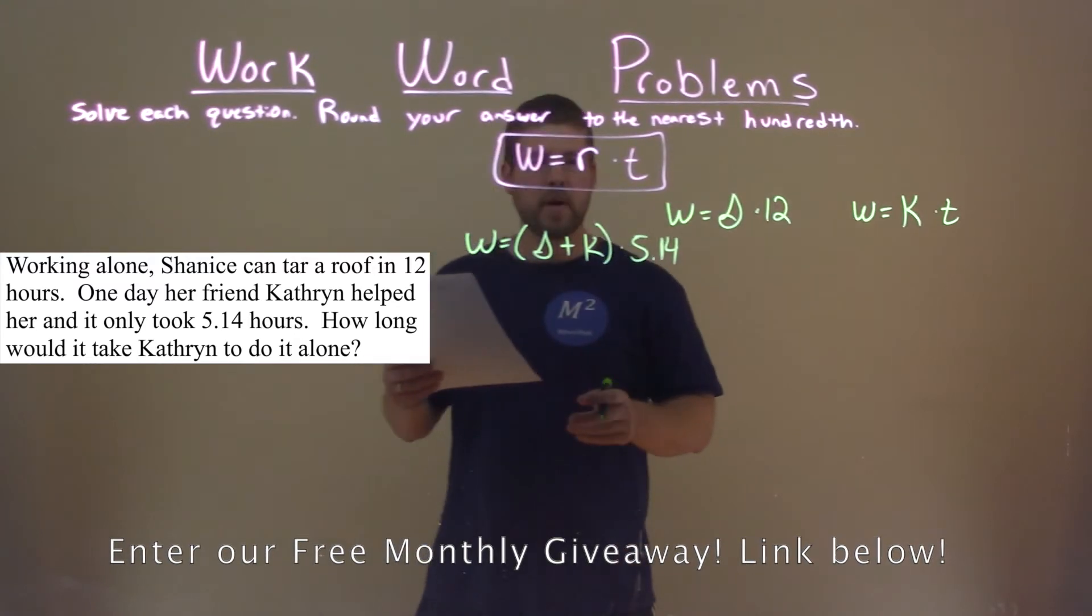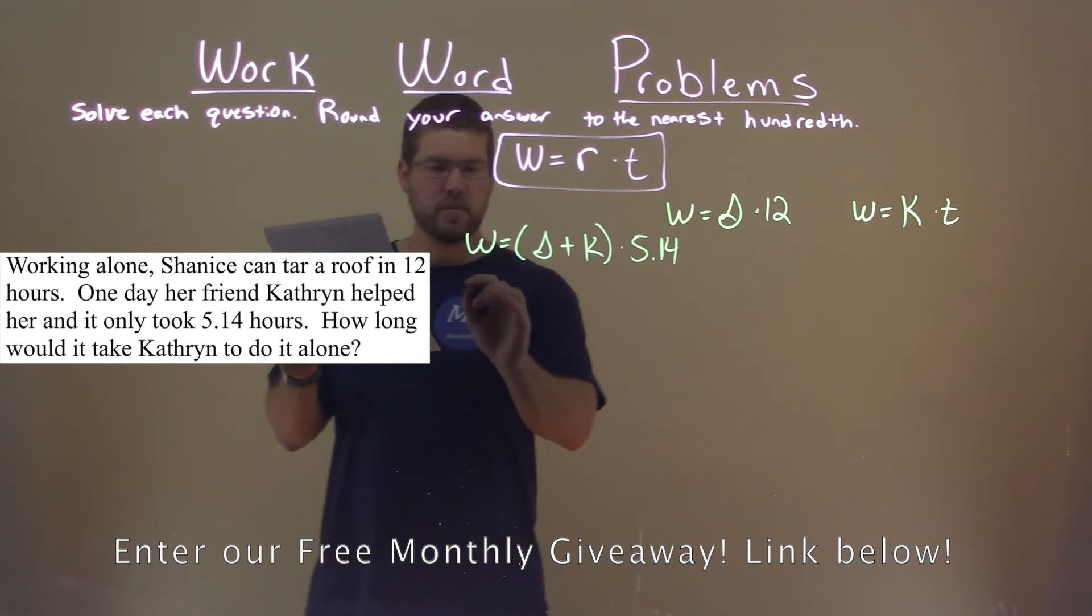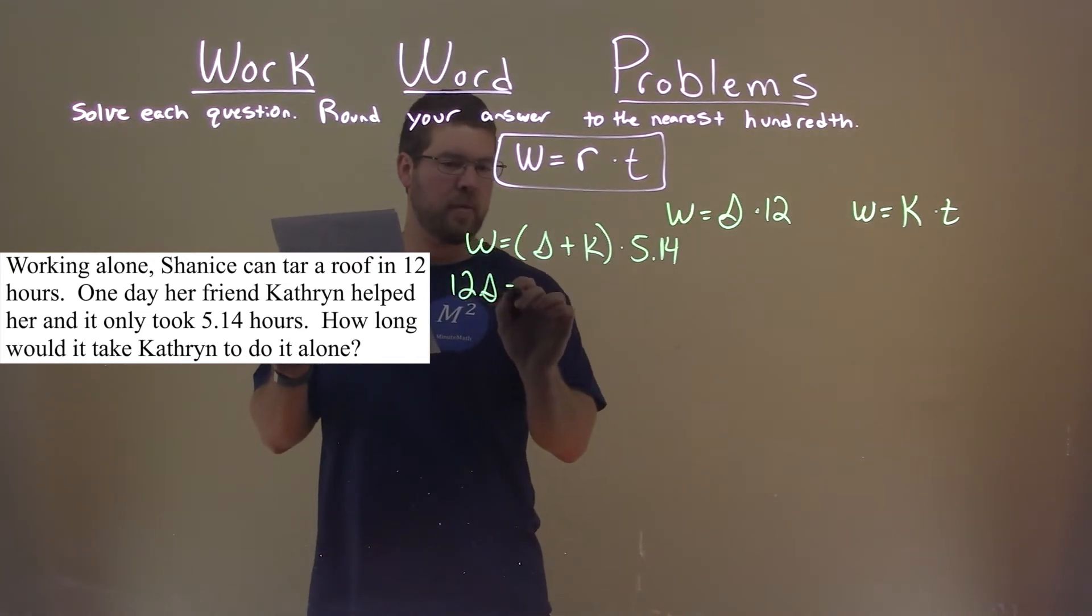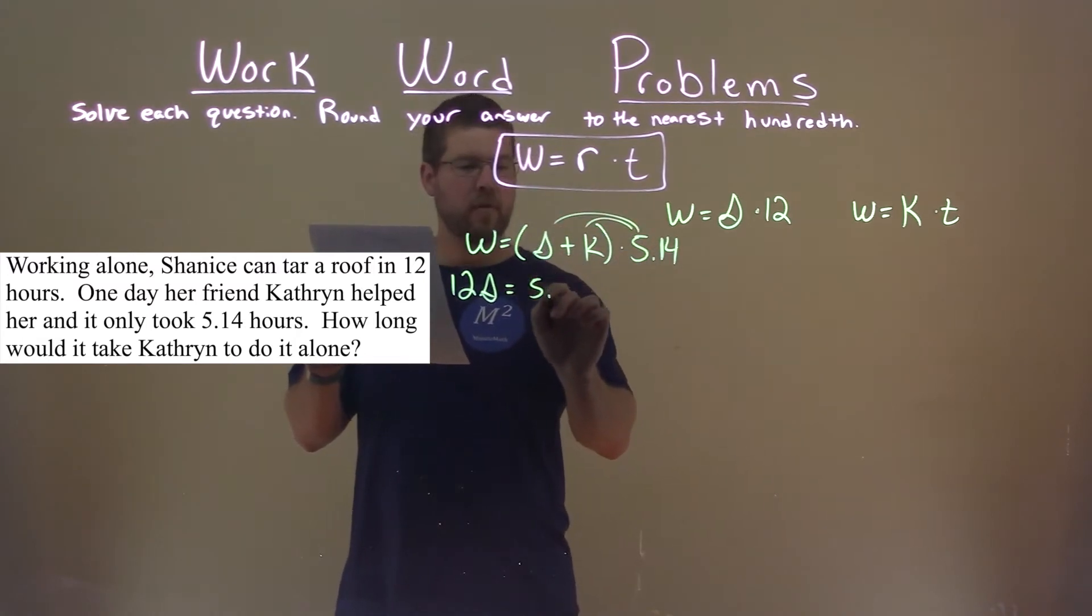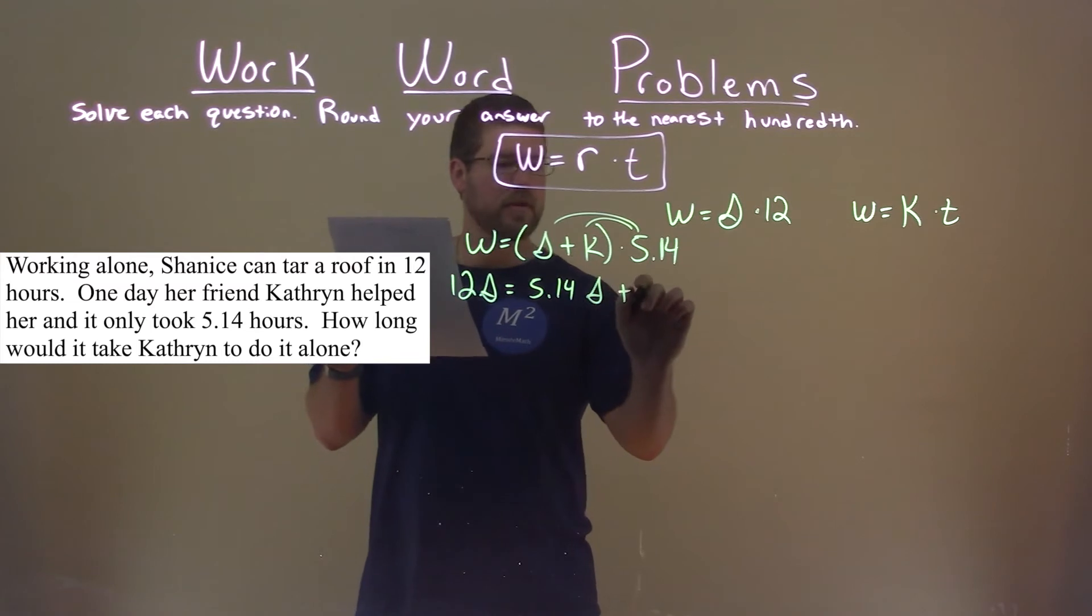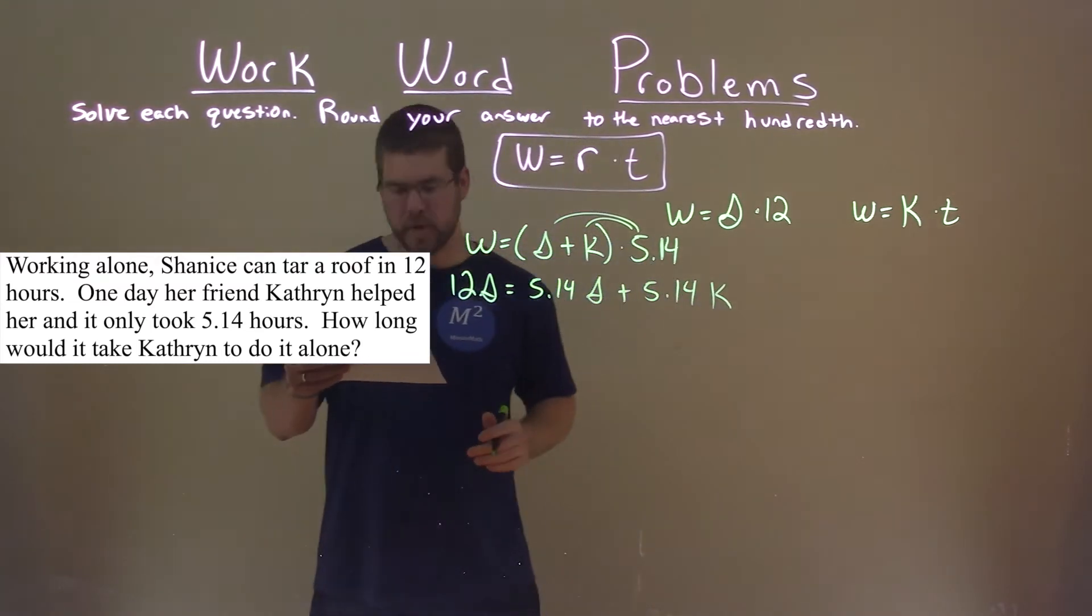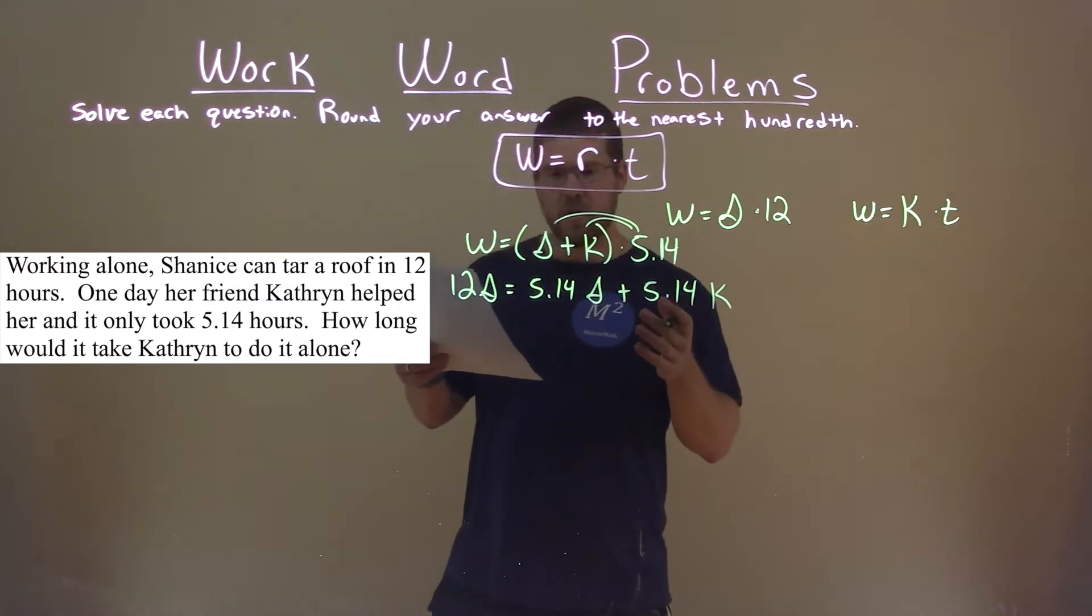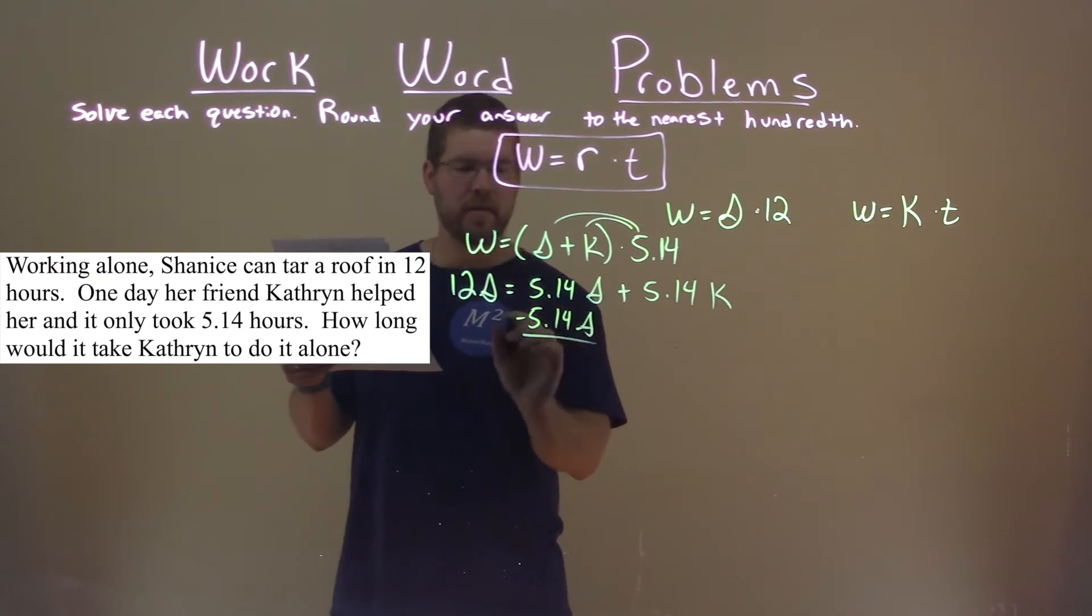Let's simplify what we know. Our work is equal to Shanice times 12, or 12 Shanice. I'm going to distribute this 5.14 to both parts here. I have 5.14s plus 5.14k. I want to get s by itself. I'm going to subtract the 5.14s to both sides to combine the like terms here.